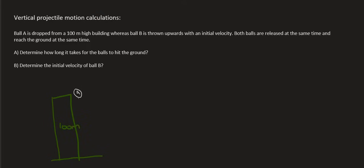So I'm going to put A over here and we know that it's going to be dropped. Remember the key word is dropped, meaning that it doesn't have an initial velocity. The initial velocity is 0.